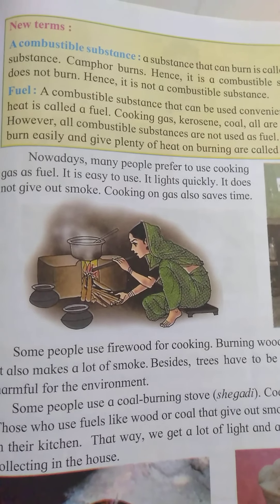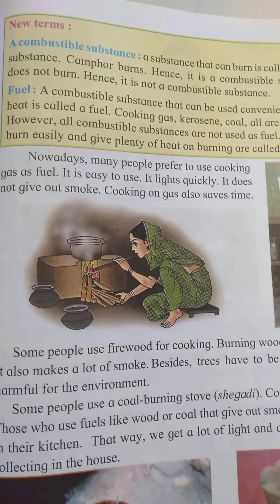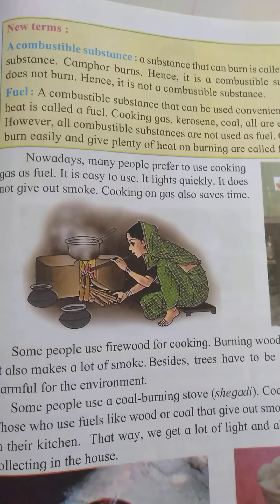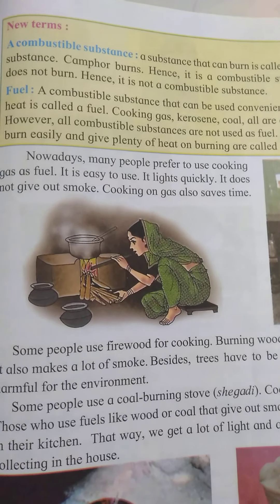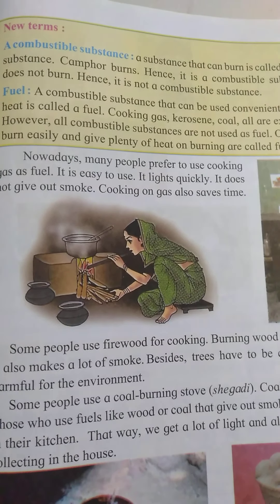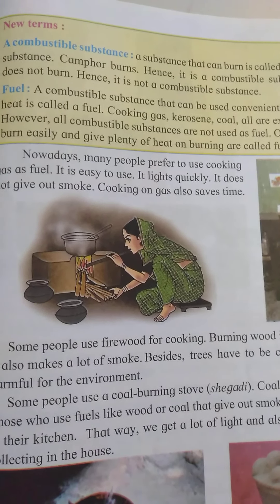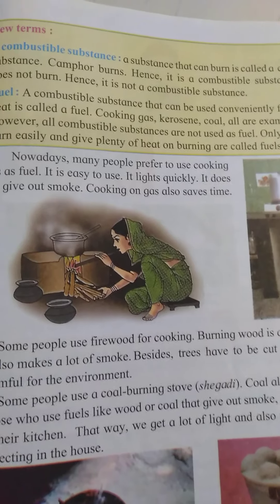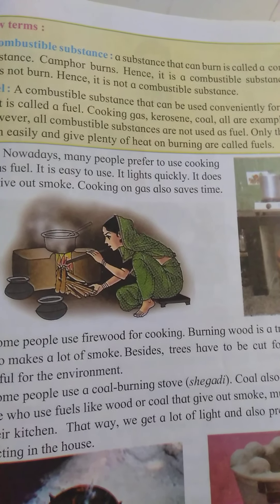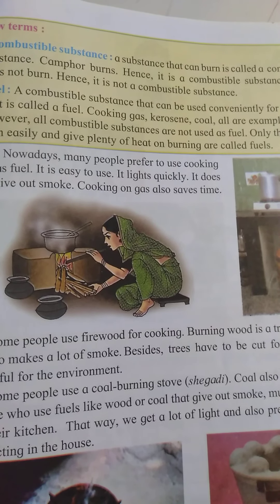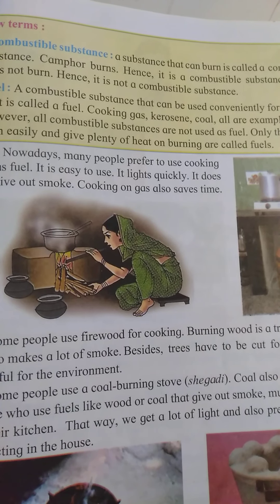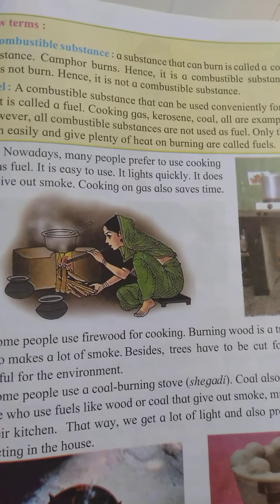Now let's learn some new terms. A combustible substance — what is a combustible substance? A substance that can burn is called a combustible substance. For example, camphor, cloth and wood.